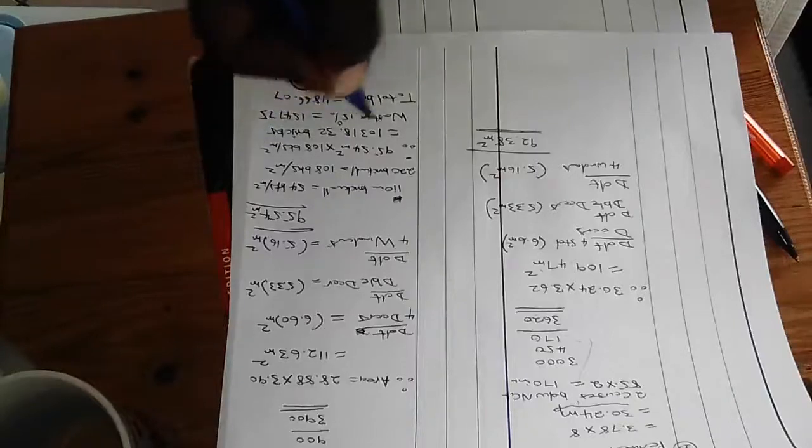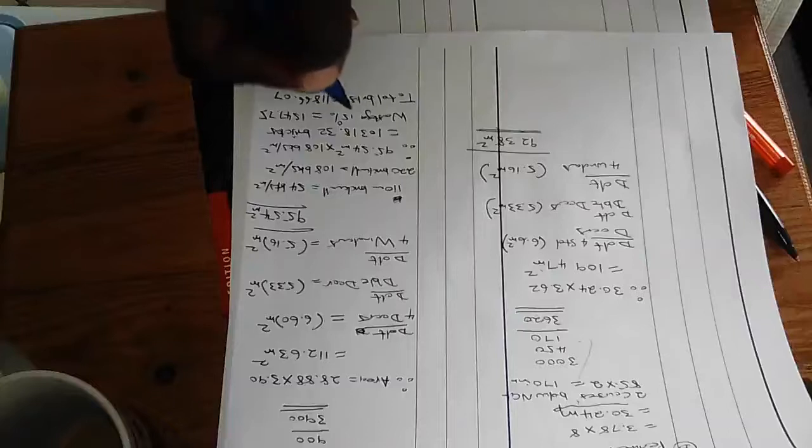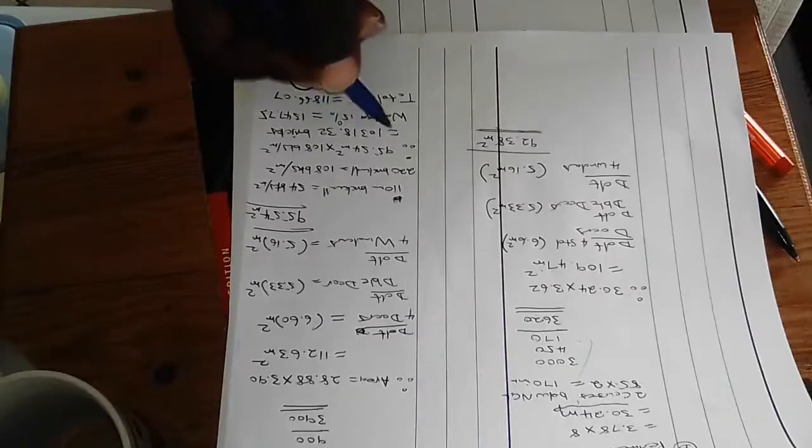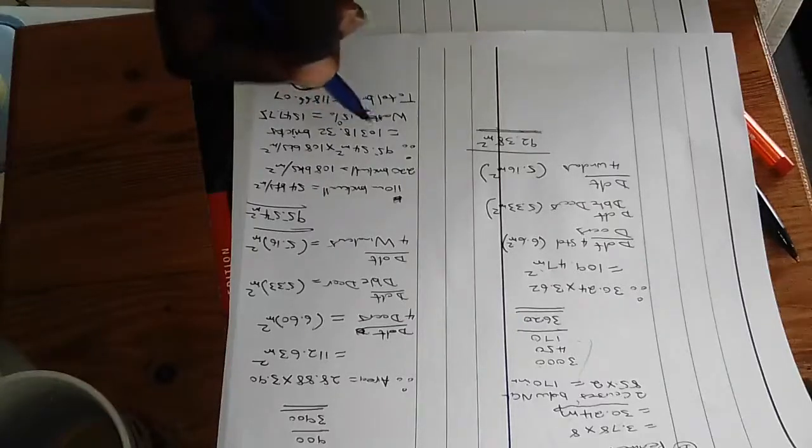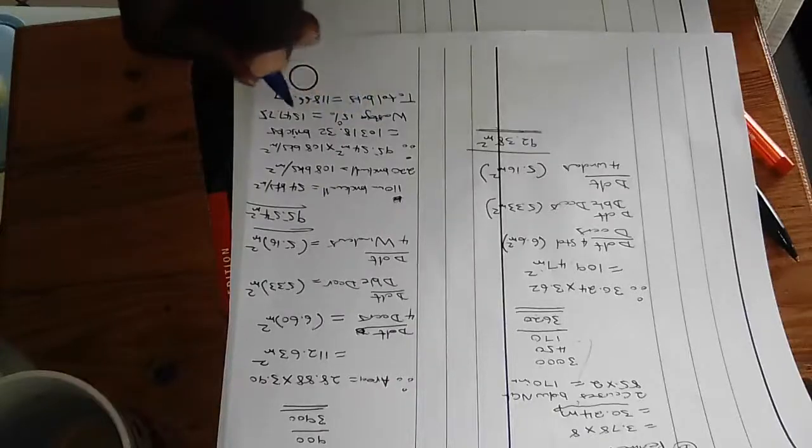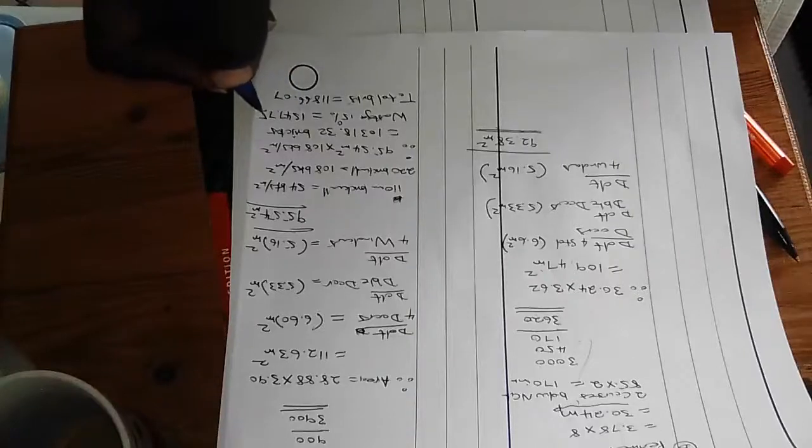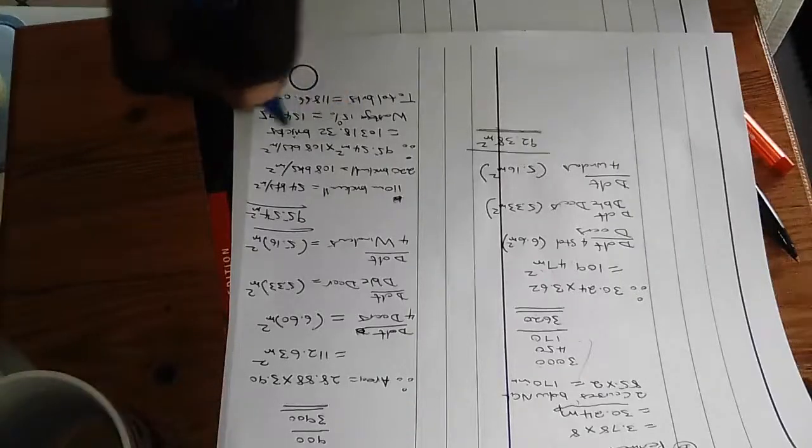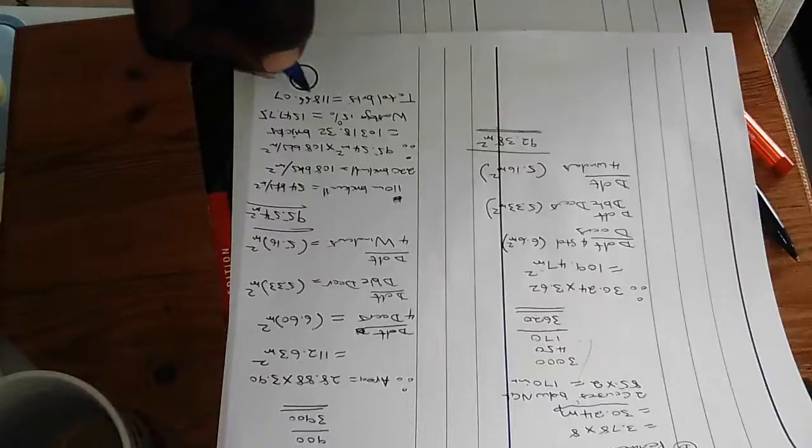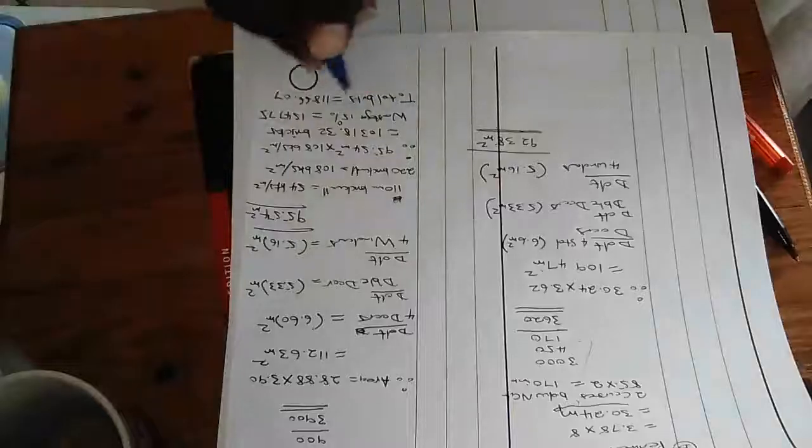And now, since we have something called wastage on site, we must allow 15 percent for wastage. So the gross total: 10,318.32 times 15 percent, you'll get 1,547.75 bricks. Add the two together.